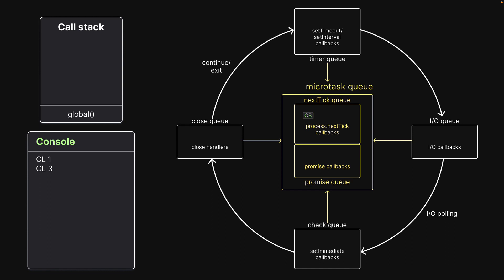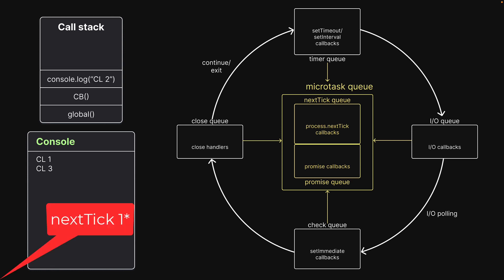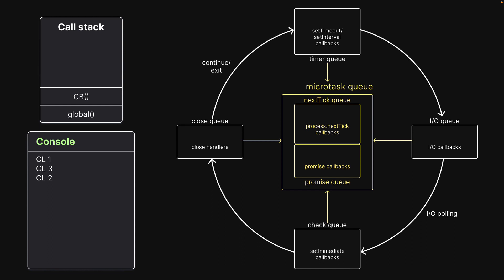Now there is no more user-written synchronous code to execute and control enters the event loop. The callback function from the nextTick queue is dequeued, pushed onto the stack, console.log is pushed onto the stack, executed, and the corresponding message is logged to the console. Console.log and the callback function are then popped off the stack. Hopefully this makes it easier to understand our first experiment.